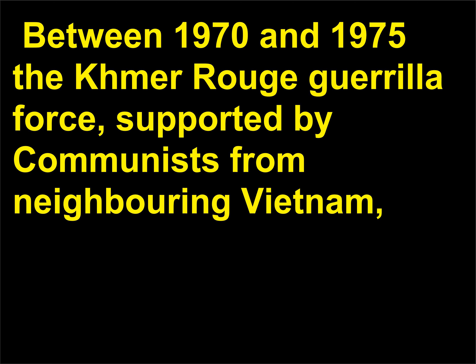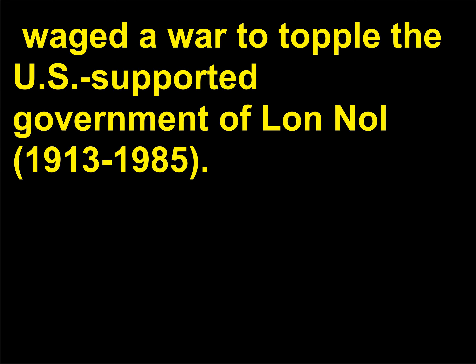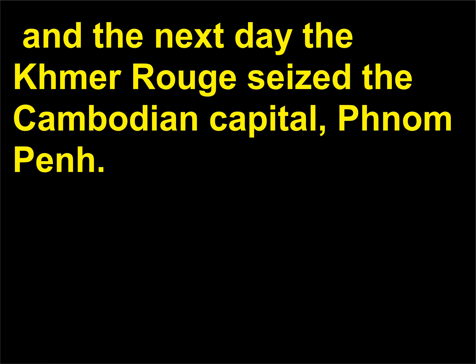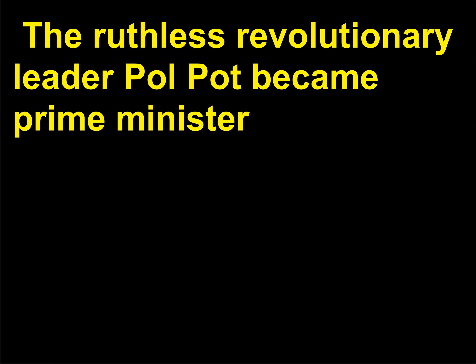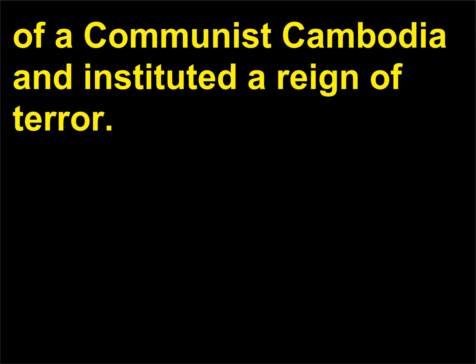The Khmer Rouge, or Red Khmer, were a group of Cambodian communists led by radical Marxist leader Pol Pot, 1925–1998. Between 1970 and 1975, the Khmer Rouge guerrilla force, supported by communists from neighboring Vietnam, waged a war to topple the U.S.-supported government of Lon Nol, 1913–1985. On April 16, 1975, Lon Nol's regime fell, and the next day the Khmer Rouge seized the Cambodian capital, Phnom Penh. The ruthless revolutionary leader Pol Pot became prime minister of a communist Cambodia and instituted a reign of terror.